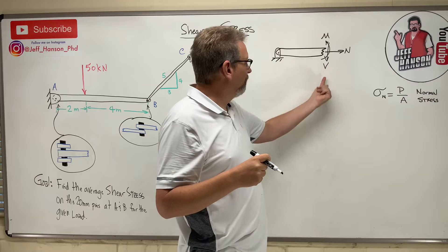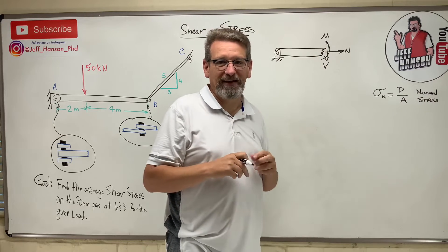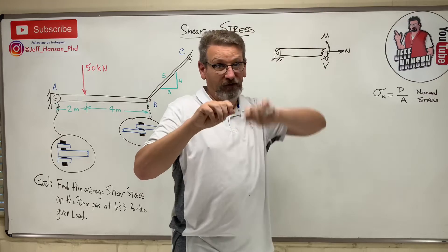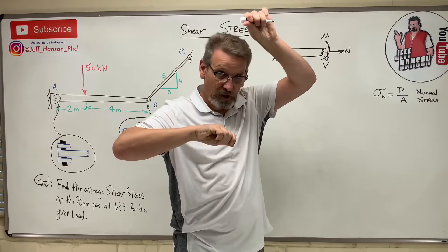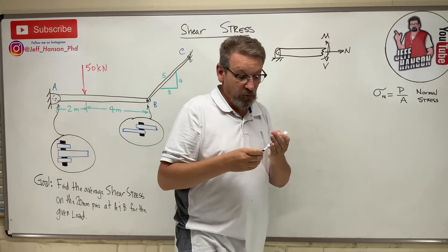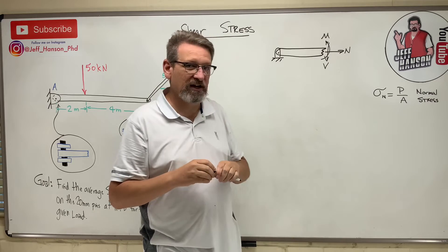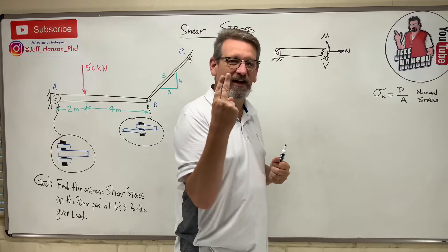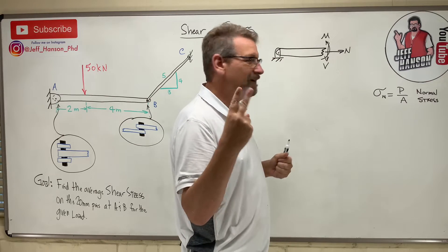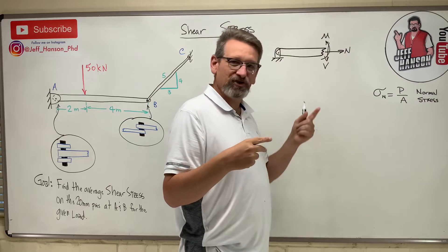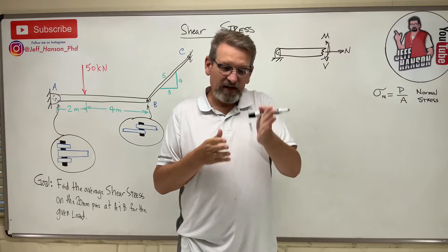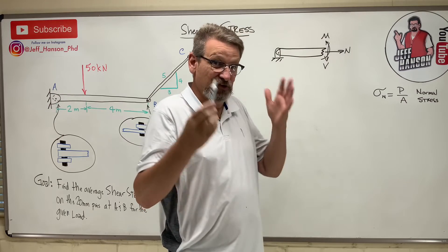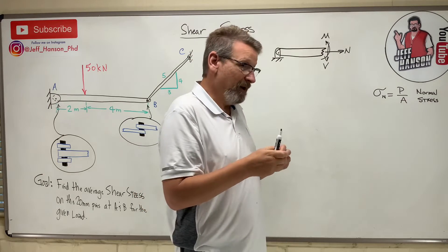V is going perpendicular to that cut plane. That's the force that's trying to go — one side going up, one going down — and you get this kind of tearing. What tool in your kitchen was called shears? Scissors. And the international sign for scissors is two fingers making a 'V'. One side comes up, the other goes down, and it shears the material.